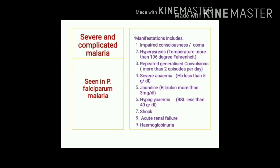Severe and complicated malaria is seen in falciparum malaria and may manifest as altered or impaired consciousness, comatose condition, hyperpyrexia exceeding 106°F, repeated generalized convulsions (more than two per day), severe anemia (hemoglobin less than 5 g/dL), jaundice (bilirubin exceeding 3 mg/dL), severe hypoglycemia (BSL less than 40 mg/dL), shock, and acute renal failure.